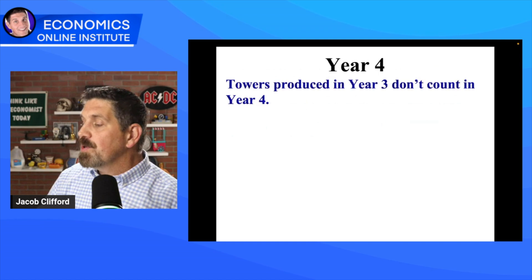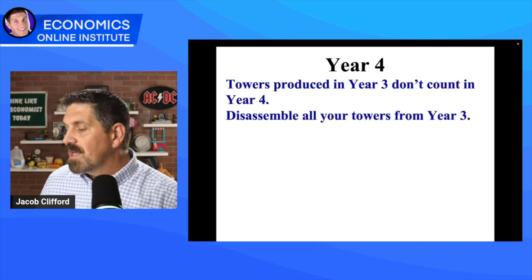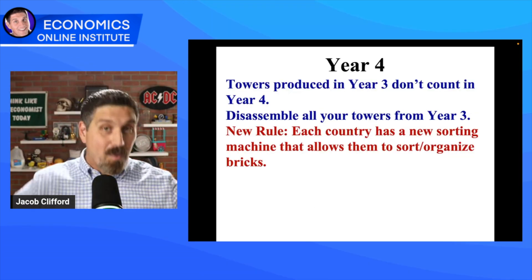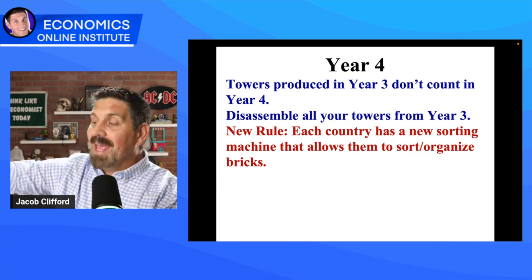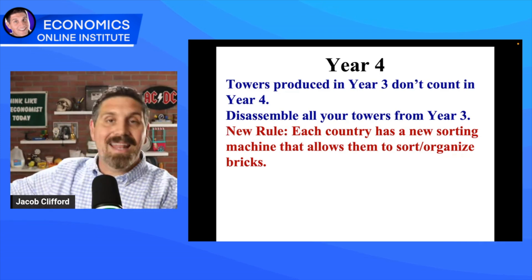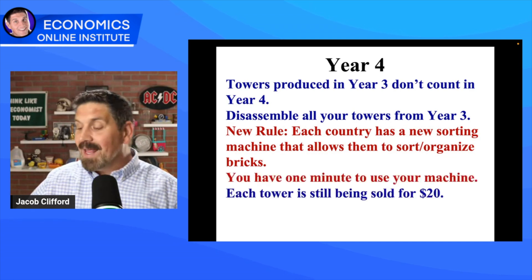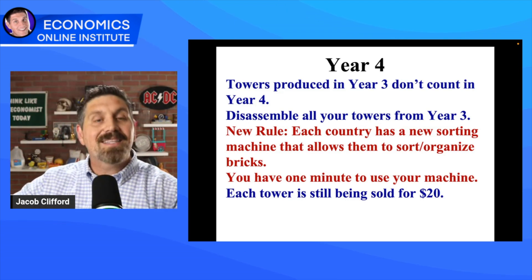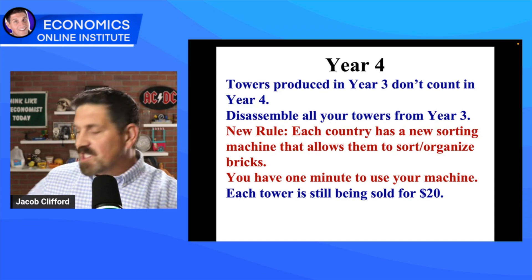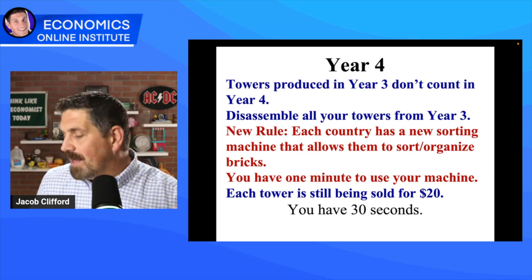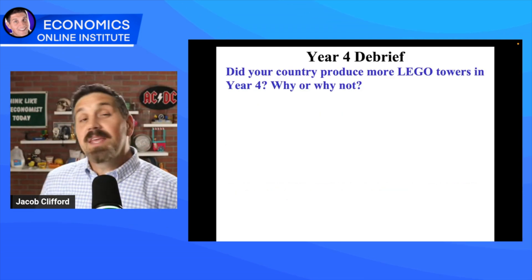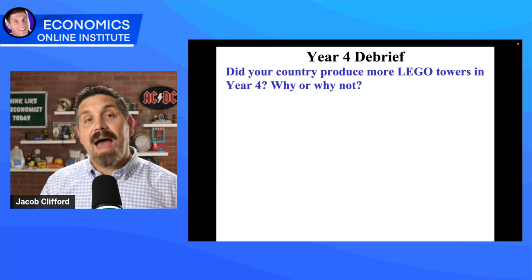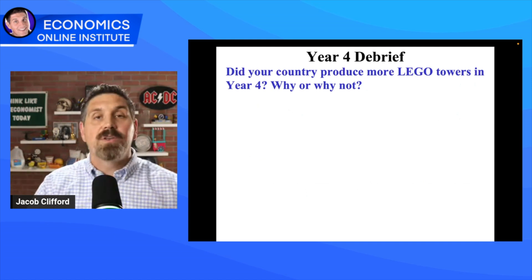In Year 4, towers produced in Year 3 don't count — take apart those towers. New rule: each country has a new sorting machine. You hand a piece of paper to every group so they can take out Legos from their bin and organize them ahead of time. Give them a minute to organize. Each tower is still $20. Students sort their pieces — these three, these three, these three — which saves them time and speeds them up. Ready, 30 seconds on the clock, on your mark, get set, and go.